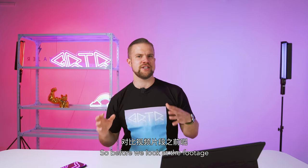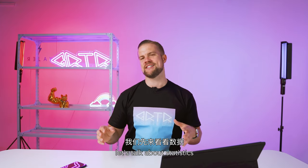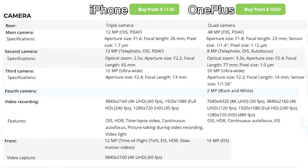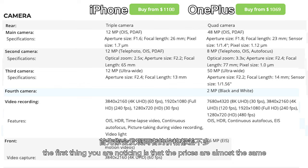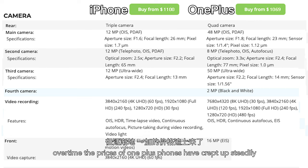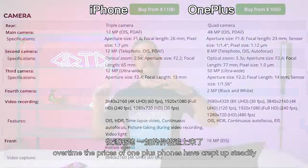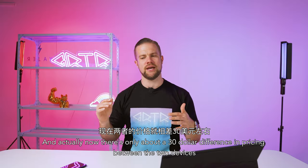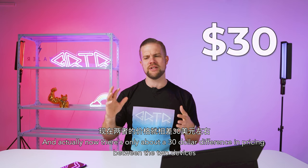Before we look at the footage, let's talk about statistics — those are up on screen now. The first thing you'll notice is that the prices are almost the same. It used to be true that the iPhone was a lot more expensive than OnePlus devices, but over time OnePlus prices have crept up steadily, and now there's only about a $30 difference between the two devices.